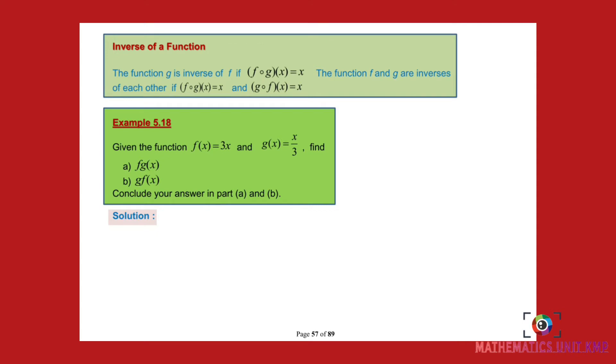Inverse of a function: as you can see in the notes stated, the function g is inverse of f if f(g(x)) equals x. The functions f and g are inverses of each other if f(g(x)) equals x and g(f(x)) equals x. So the composite function of both the function and its inverse should give you x only.